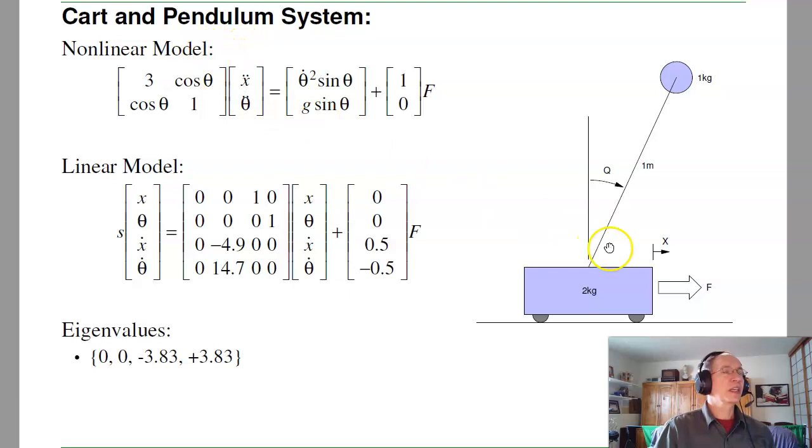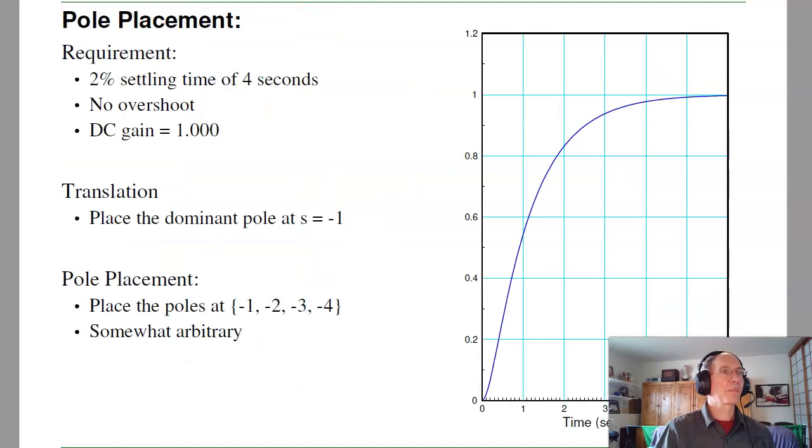First, as a review, the nonlinear model for a cart pendulum system where the base is 2 kg, the length is 1 m, the ball is 1 kg, this is as follows. The linearized dynamics has a 4x4 A matrix, your B matrix, and if you check the eigenvalues, it's unstable. Of course it falls down. Poles are at 0, 0, minus 3.83, and the one that kills you, pole at plus 3.83. So if I do nothing, it falls over, decaying as e to the plus 3.83t.